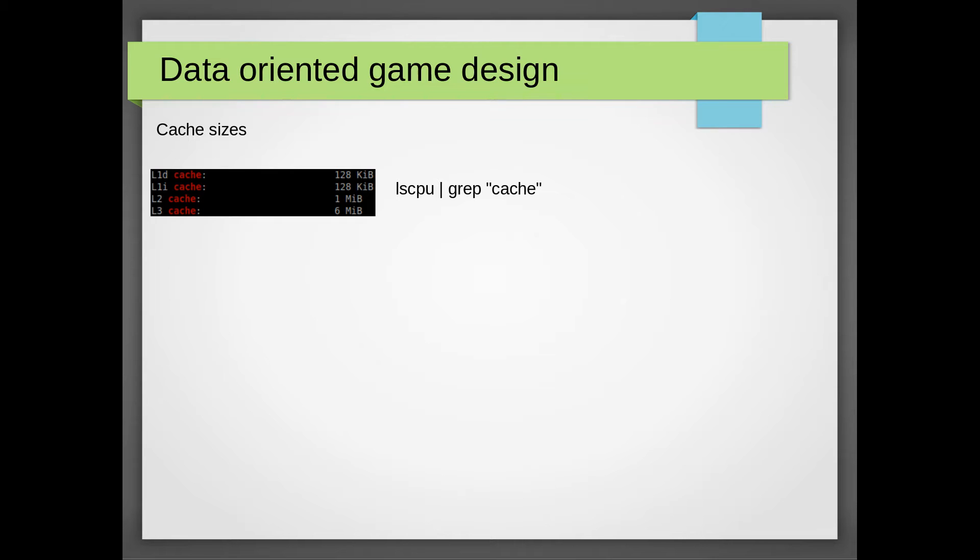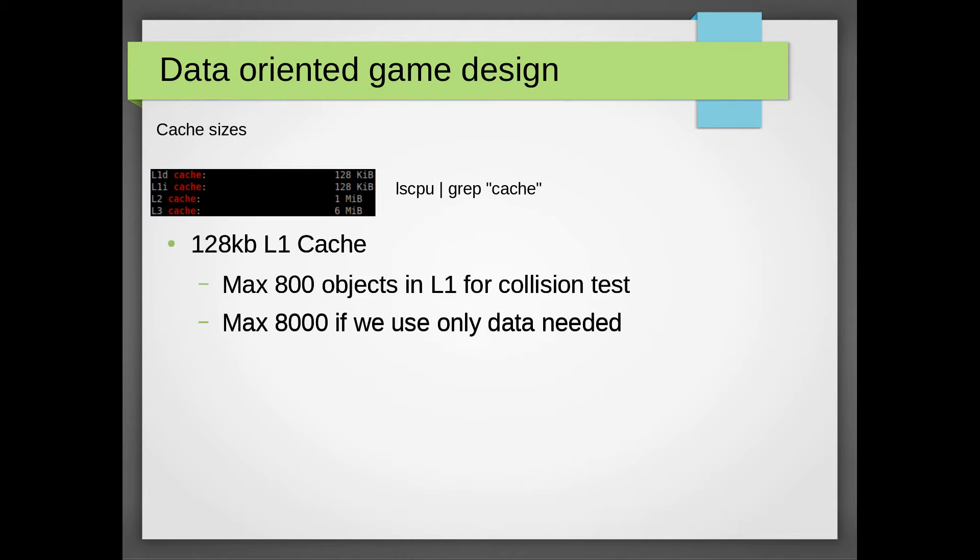Let's have a look at our cache size again. If you are running on Linux you can see the cache size using LSCPU from the terminal. In my case I have an L1 cache which is split into L1D and L1I each consisting of 128 kilobytes. For sake of simplicity let's assume the L1 cache is 128 kilobytes big.